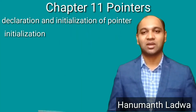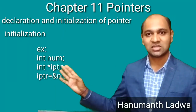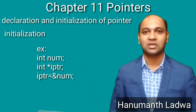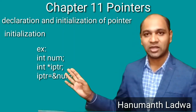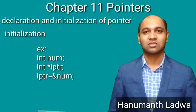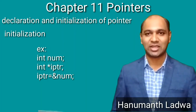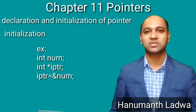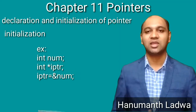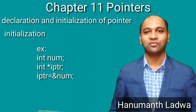To initialize a pointer variable, consider this example: 'int num' and 'int *iptr', then 'iptr = &num'. Here, using the address-of operator (ampersand), the address of num is initialized to iptr, which is the pointer variable. The next operator is the indirection operator, that is the asterisk symbol. The asterisk symbol represents the value stored in the particular memory location pointed to by the pointer.